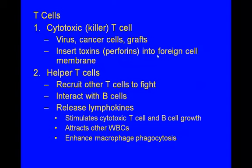Types of T cells: cytotoxic T cells, also called killer T cells or T8 cells, can attack grafts, cancer cells, and viruses. They insert toxins called perforins into foreign cell membranes. Helper T cells, also called T4 cells, recruit other T cells to fight and can activate B cells. They release lymphokines, which stimulate T8 cell and B cell growth, attract other white blood cells, and enhance macrophage phagocytosis.